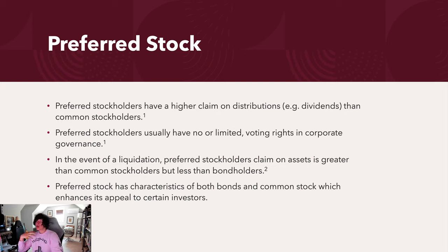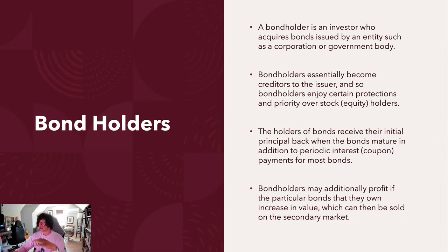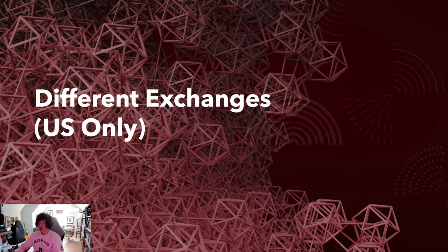Bondholders are another category. Think about how governments distribute bonds — well, corporations can do the same thing. The company issues bonds, you buy them, and you get a certain interest rate over a set number of years. In the next video, we're going to talk about different exchanges in the market, and I'll catch you in the next video.